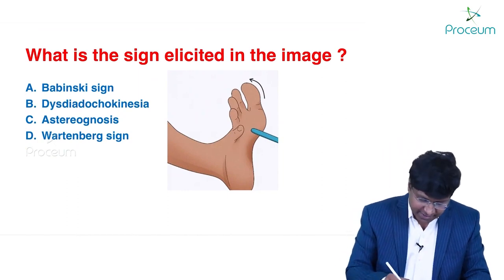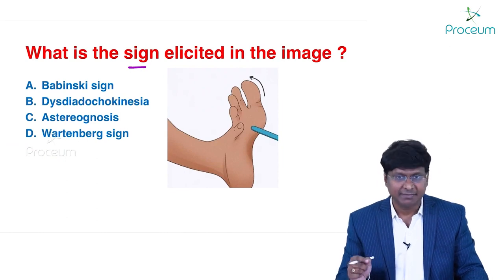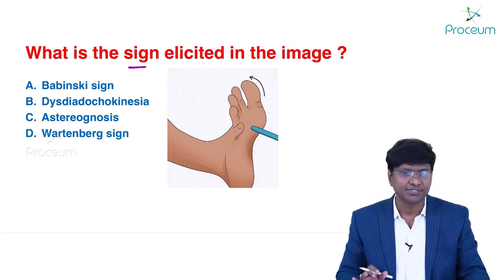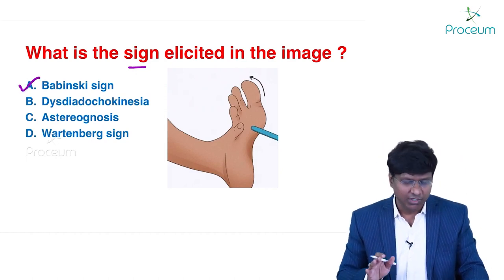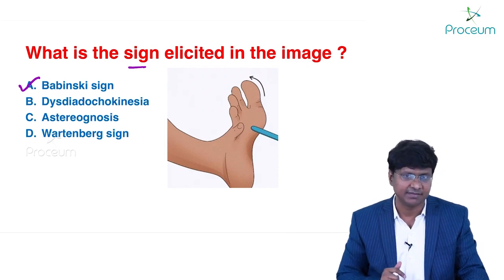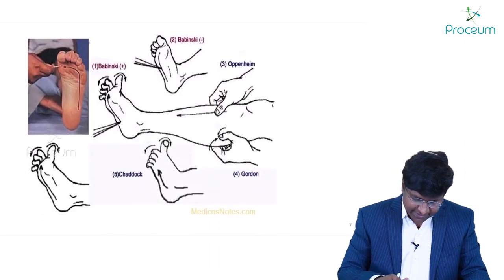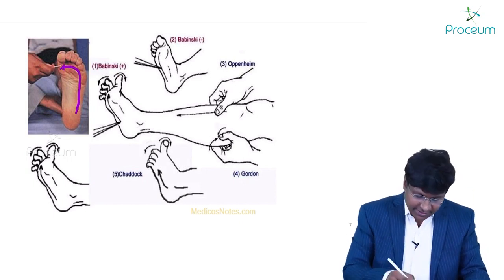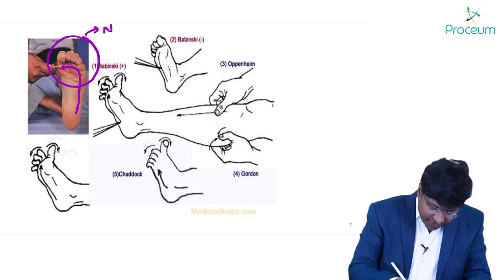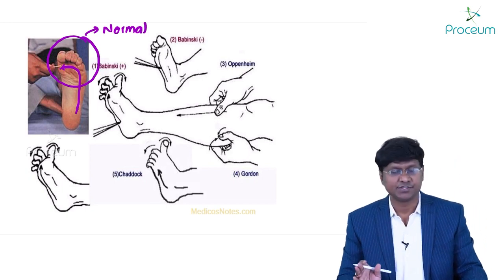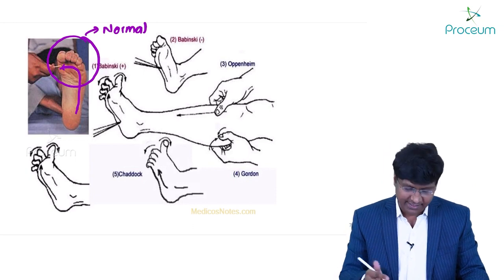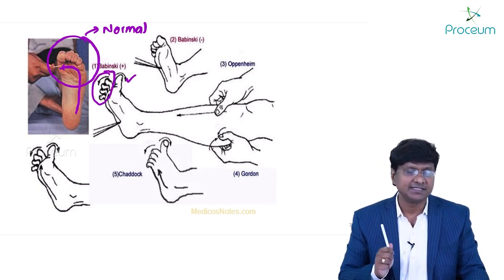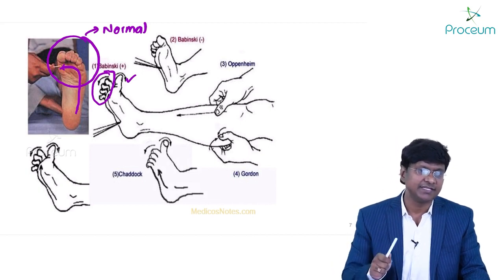The next image-based question asks: what sign is elicited? The answer is Babinski sign. The plantar reflex is elicited by giving a blunt stimulus from the lateral to medial aspect of the foot. The normal response is a flexor response. Babinski sign is extension of the great toe and fanning out of the other toes, suggesting upper motor neuron lesion.